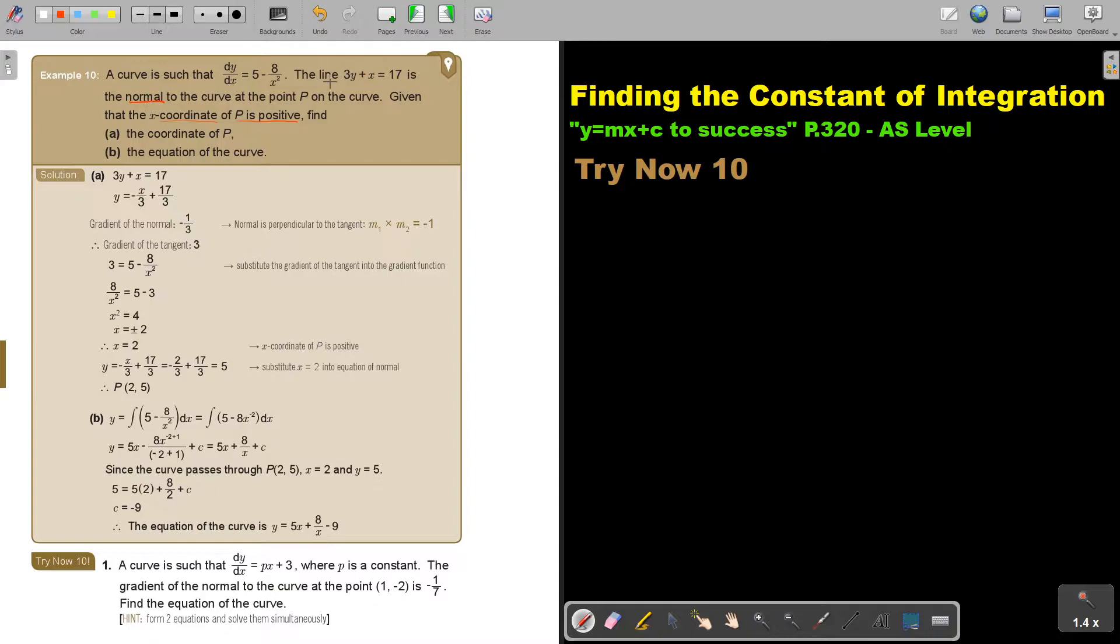Now first let's work with this to find the gradient of the tangent. But let's first find the gradient of the normal. So make Y the subject of the formula. Take it over, divide 3. So what is my value of M? It's negative 1/3. But that's the gradient of the normal. Remember, the normal is perpendicular to the tangent. So what will be the gradient of the tangent? That will be the reciprocal with different signs, which is 3.